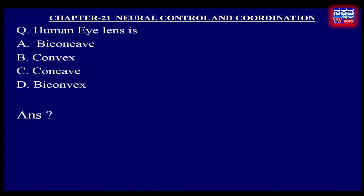Human eye lens is: A. Biconcave, B. Convex, C. Concave, D. Biconvex.